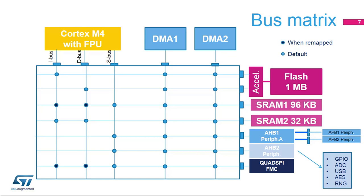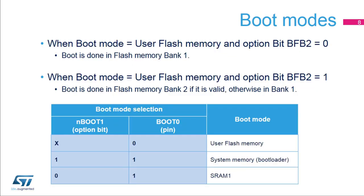There are three boot modes, which are selected by the boot0 pin and an option bit named nBoot1. When the boot0 pin is at low level, the STM32L4 boots from the user flash memory, which is aliased at address 0 — this is the standard method. When the boot0 pin is at a high level, the nBoot1 bit determines the boot mode. The default option bit setting is high, enabling the bootloader in the system memory portion of the flash memory. The other option is booting from the SRAM1 memory region, which may be used for debugging purposes.